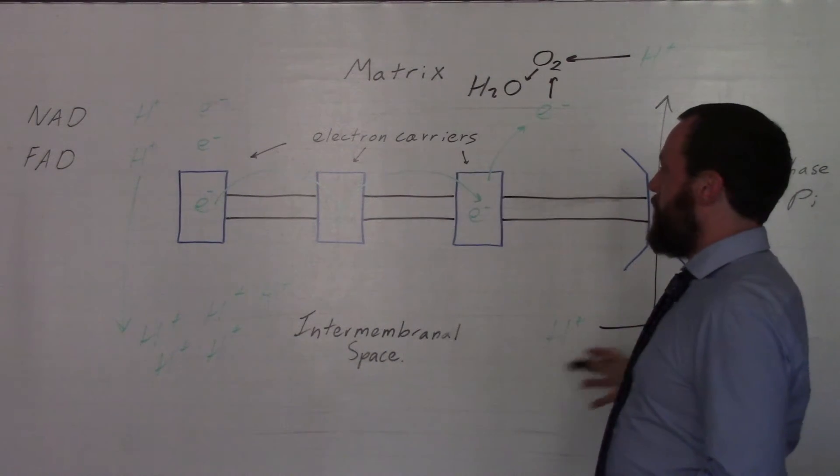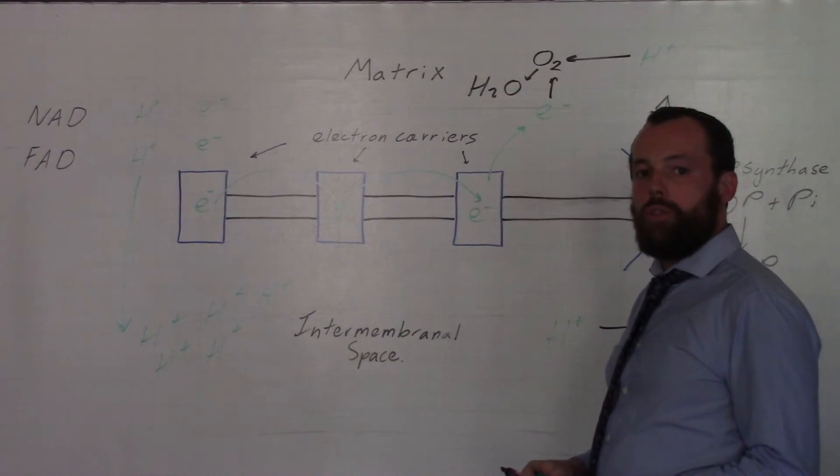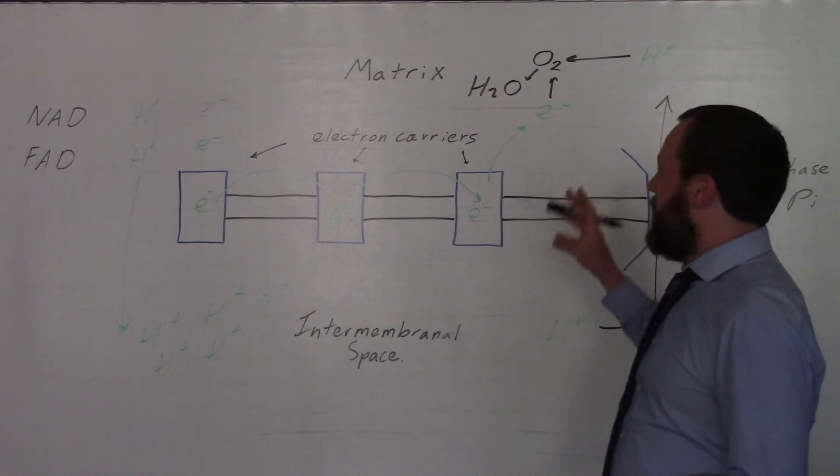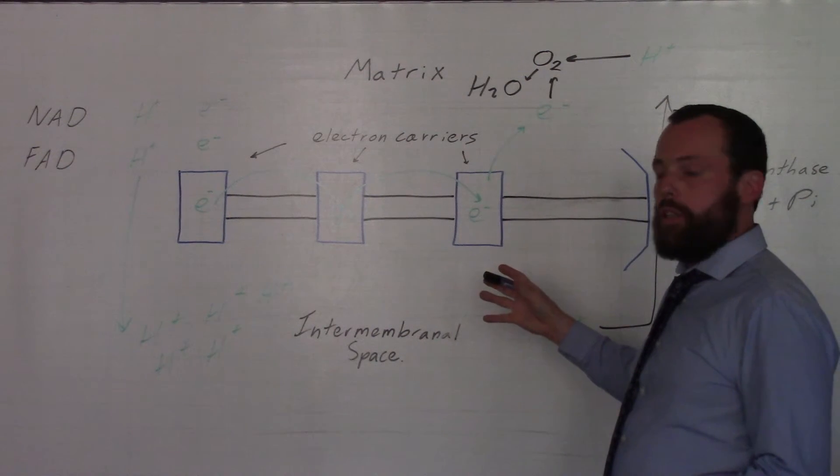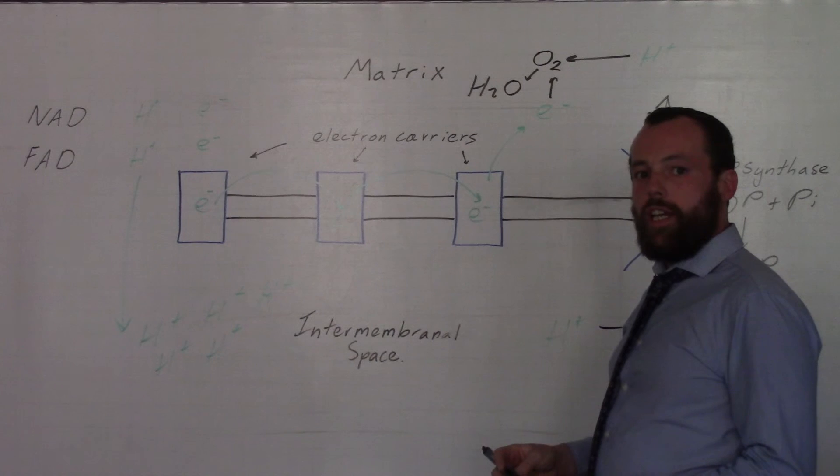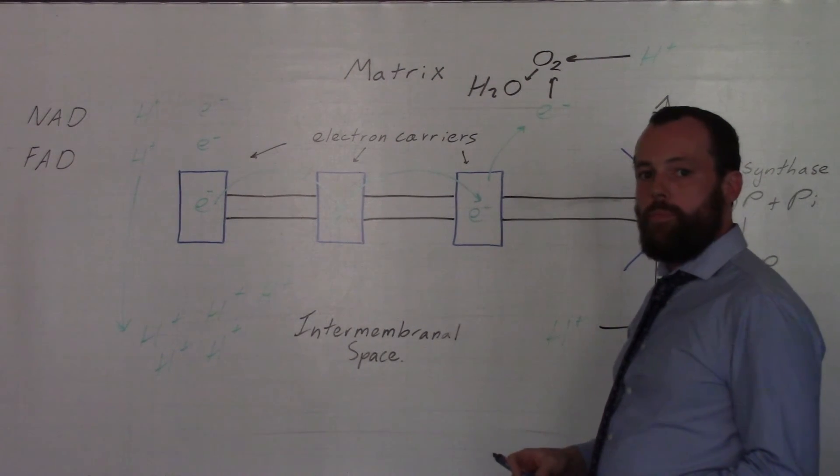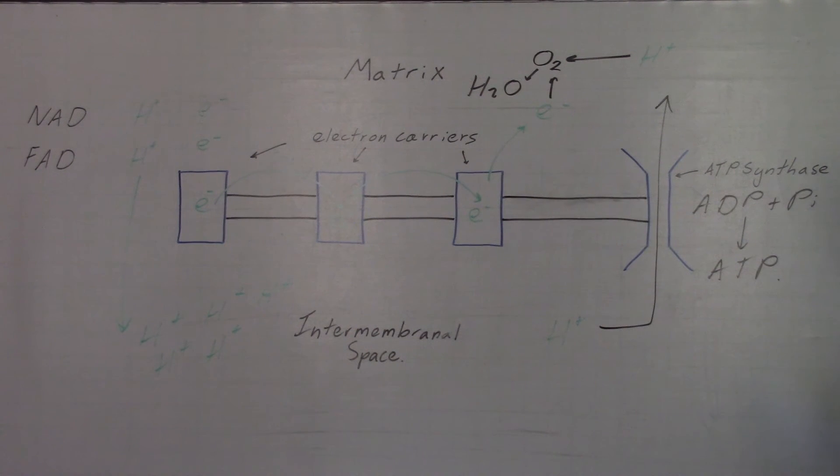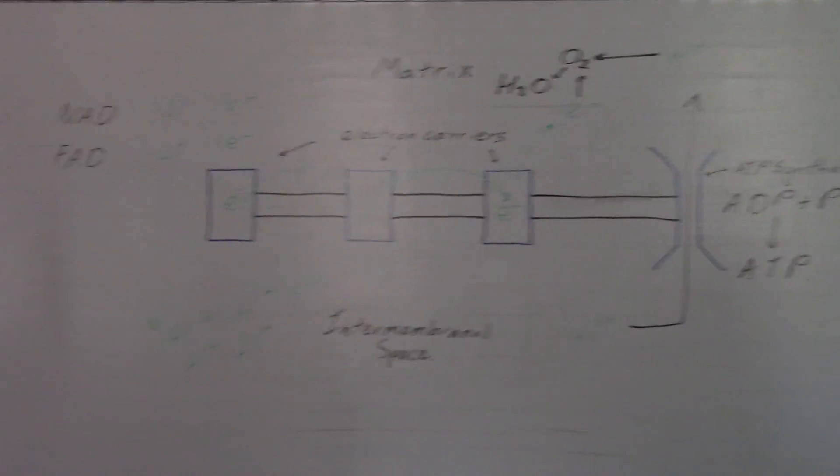This whole process can be referred to as chemiosmosis, and that's usually a marked point. In doing this, we generate large amounts of ATP using the hydrogens which have been previously gathered using NAD and FAD from the previous reactions in respiration.